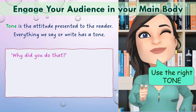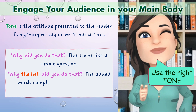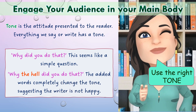For example, if we were to say 'why did you do that?' — this seems like a simple question. But if we were to say 'why the hell did you do that?' — the added words completely change the tone and suggest the writer is not happy. So a lot of getting the right tone is to do with word choice. If you are writing a persuasive argument, you may want some negative tones in order to make your reader feel outraged at a topic, so they support you. Think about what tone and attitude you want to present, and choose your words accordingly.